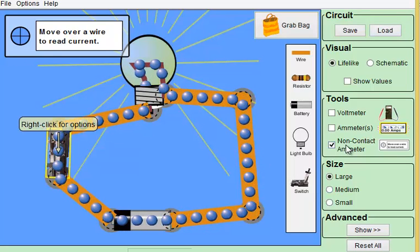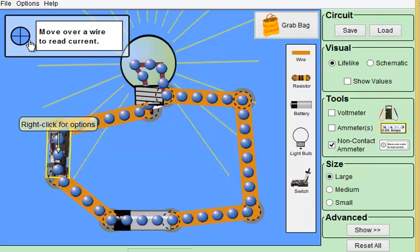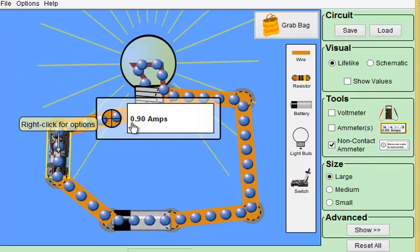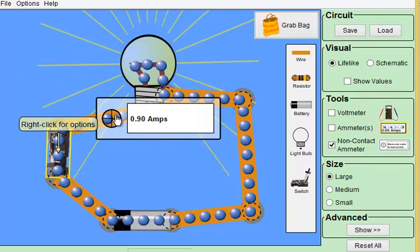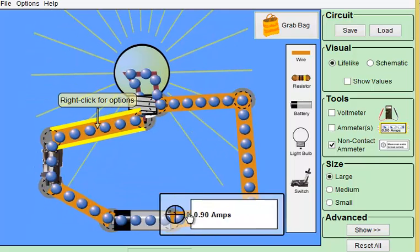So we're back. I clicked on non-contact ammeter, which measures amps. And wherever I place it over the wire, it will read to me the amperage. So 0.90 amps. If I measure it over here, 0.90. Over here, 0.90.